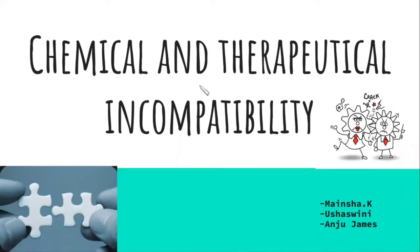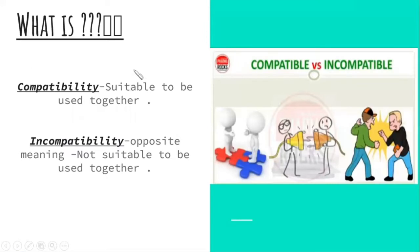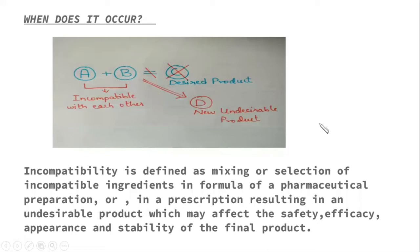Now to understand what is incompatibility, we need to understand what is compatibility. Compatibility, as the diagram suggests, means substances are suitable to be used together. Whereas incompatibility, as shown in this diagram, means they are not suitable to be used together. So that is incompatibility.